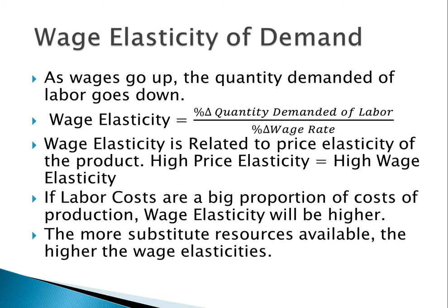The main topic in this chapter is labor. Labor is a resource and it can be bought or sold. The price labor is sold at is called the wage rate, and the quantity is just the quantity supplied. Labor also has supply and demand, just like in a product market. How labor works is that as wages go up, the quantity demanded for it goes down.